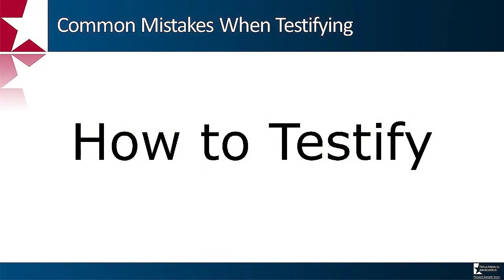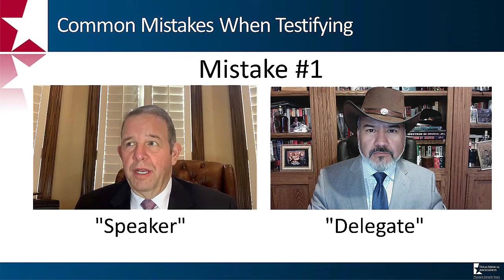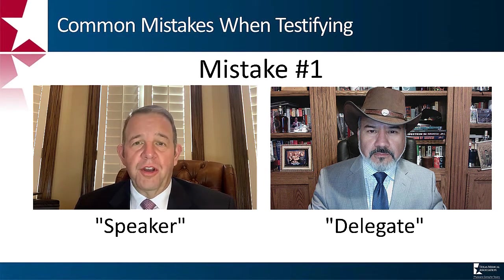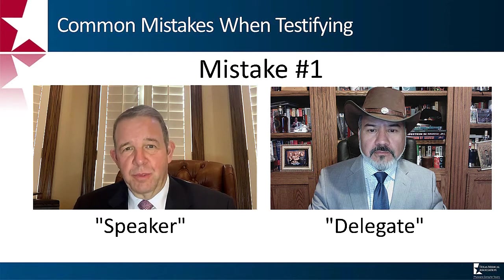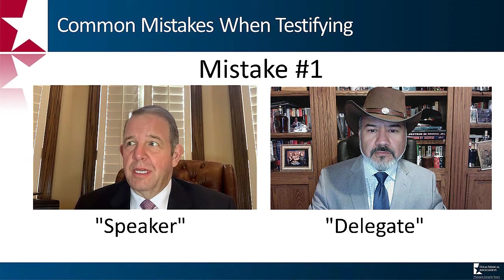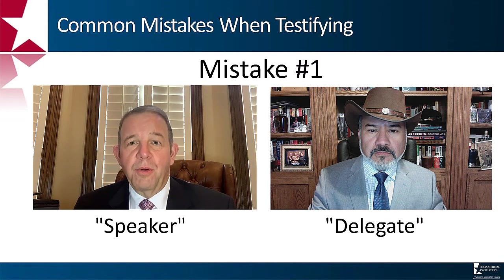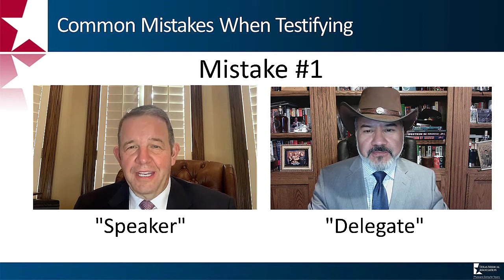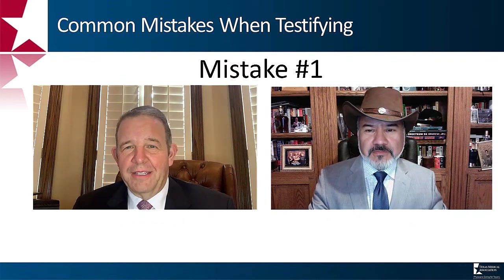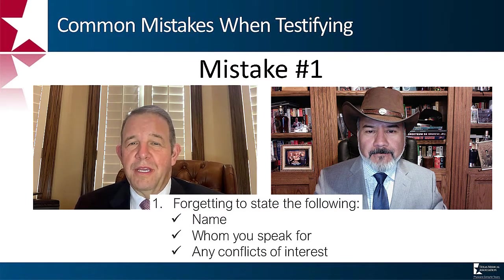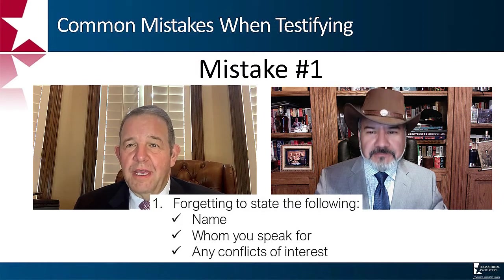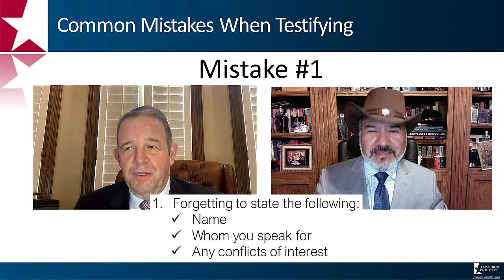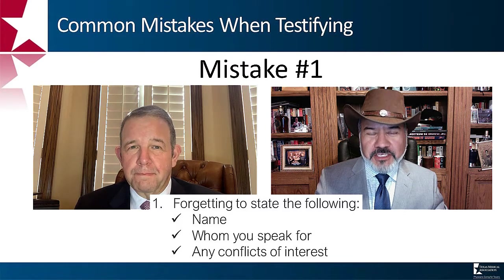Dr. Flores and I will now demonstrate the incorrect way to testify at a hearing or meeting. Next on the agenda is item number one: resolve that the Texas Medical Association hold a charity horseshoe throwing tournament against the Texas Hospital Association. Your reference committee recommends adoption. At microphone number one, a delegate begins to speak in favor of adoption without stating his name or conflicts of interest — the speaker kindly interrupts to remind him to state his name, who he is speaking on behalf of, and disclose any conflicts of interest before proceeding. The delegate identifies himself as Dr. Doolittle, speaking on behalf of the Dawson County Medical Society, with no conflicts of interest.